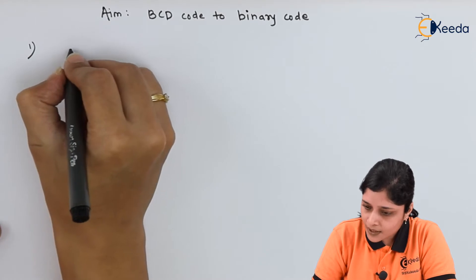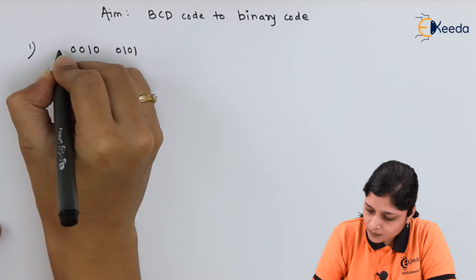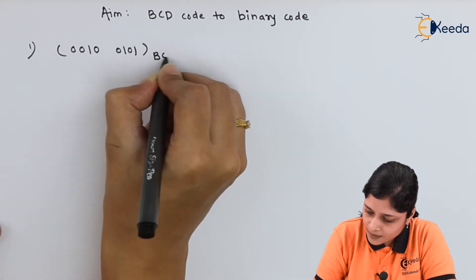Given example is 0010, 0101 to the base BCD.